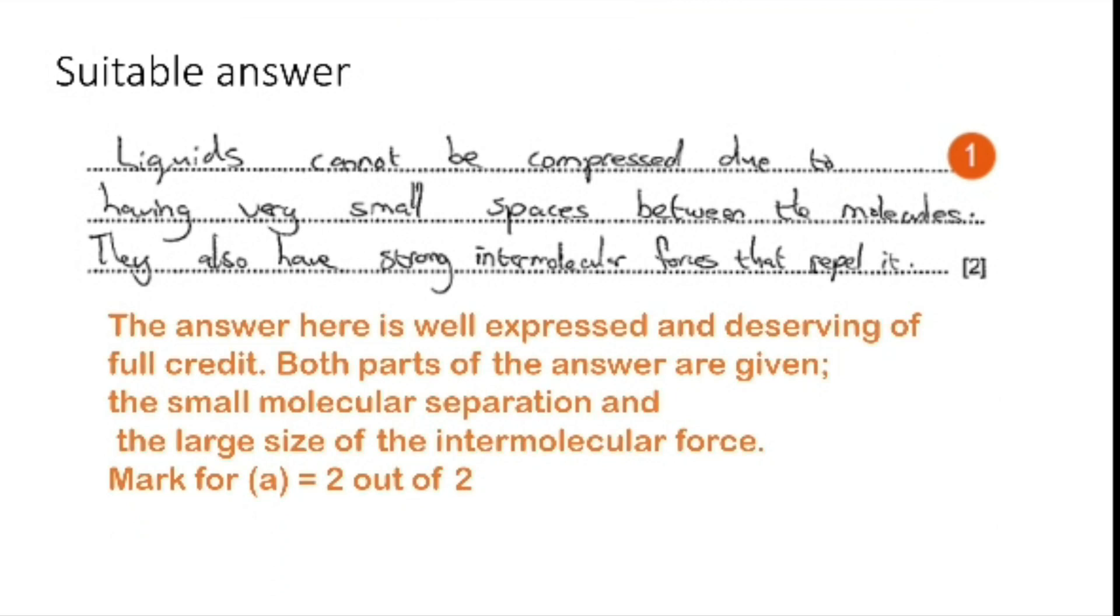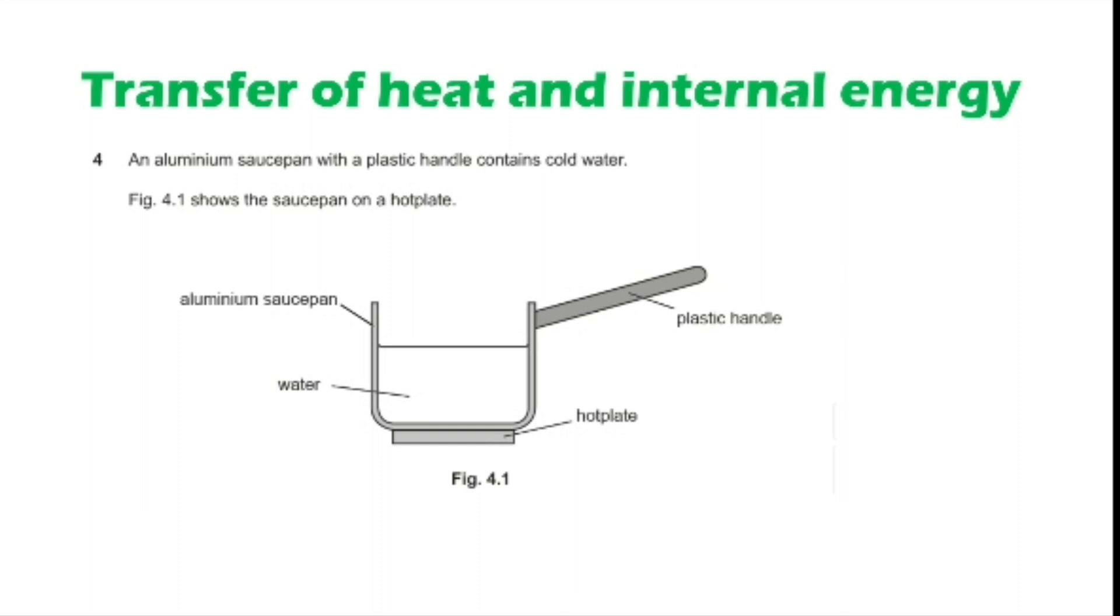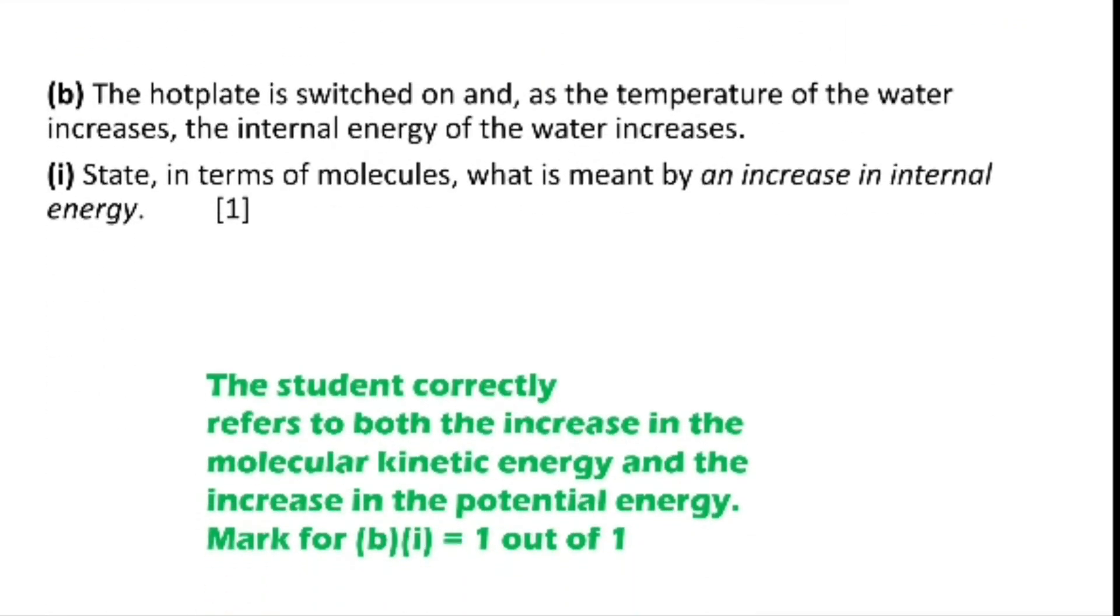Next question is related to transfer of heat. An aluminum saucepan with a plastic handle contains cold water. The first question is: state why the pan is made from aluminum but the handle is made from plastic. That's very simple. Here you need to do a comparison: aluminum is a conductor whereas plastic is an insulator. Next question is: the hot plate is switched on, and as the temperature of the water increases, the internal energy of the water increases. State in terms of molecules what is meant by an increase in internal energy.